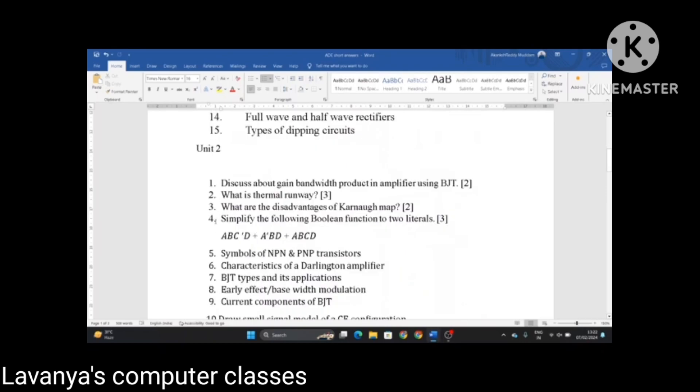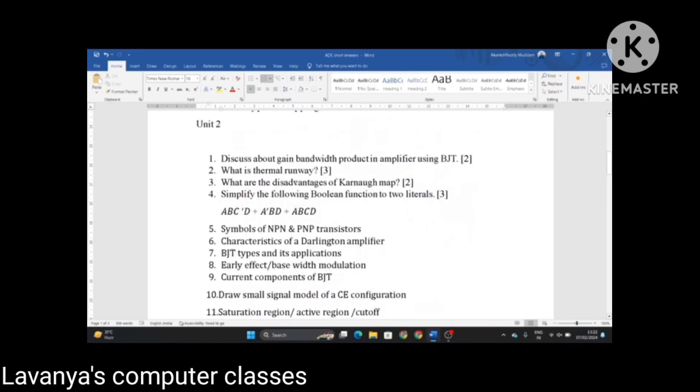The unit 2 short answer questions are: discuss about gain bandwidth product in an amplifier using BJT, what is thermal runaway, what are the disadvantages of Karnaugh maps, simplify the following Boolean function to two literals. This is old question paper, expression will be changed, but questions are coming in this format, very important.